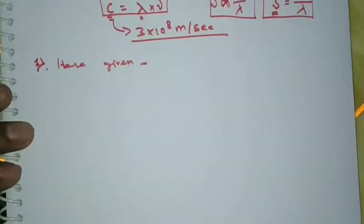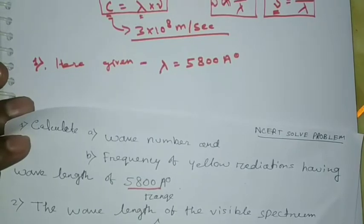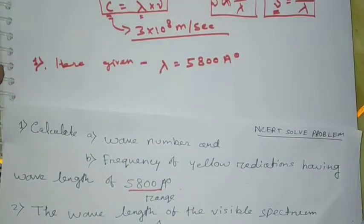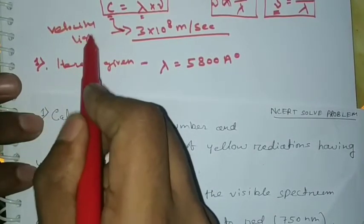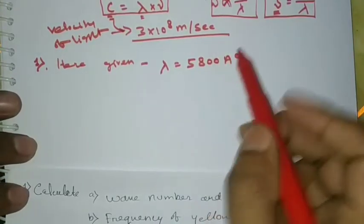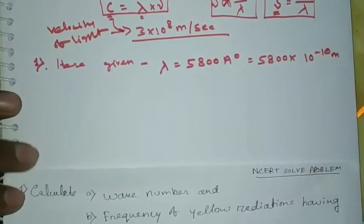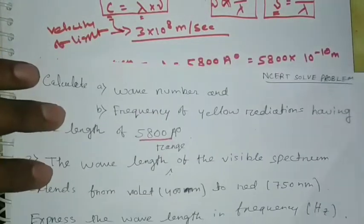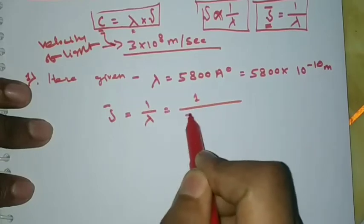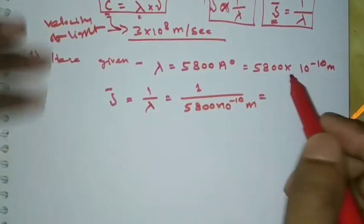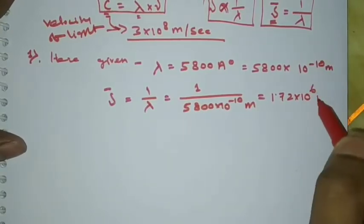Given: wavelength lambda is equal to 5800 Å. Convert 5800 Å into meters: 5800 into 10 to the power minus 10 meters. Now calculate the wave number. Wave number nu-bar is equal to 1 by lambda, so 1 divided by 5800 into 10 to the power minus 10 meters. You get the answer: 1.72 into 10 to the power 6 meter inverse.